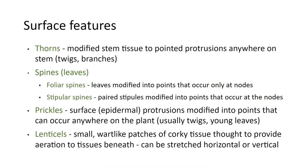Let's talk about the epidermis and surface features of twigs. There are things that can grow out that are considered stem tissue. Thorns are stem tissue — modified into pointed protrusions that can occur anywhere on the stem, emerging from the stem itself. That's an important distinction. We've already talked about spines, which are modified leaves — generally modified into points. You can tell it's a spine because leaves are always attached at the node, so if you see a pointed structure subtended by a node, you can be sure you have spines.